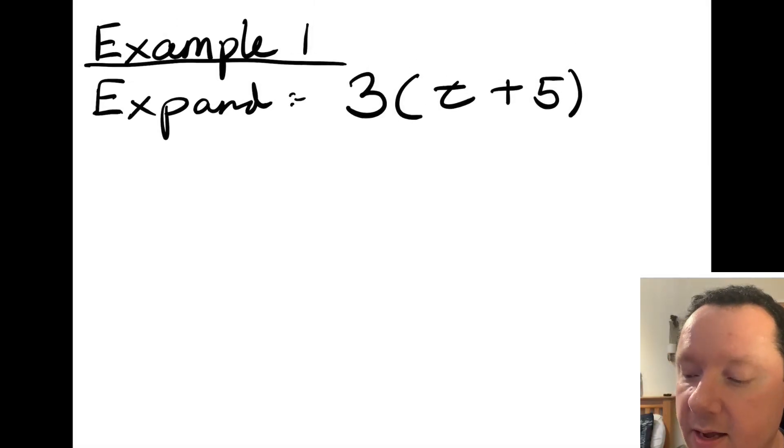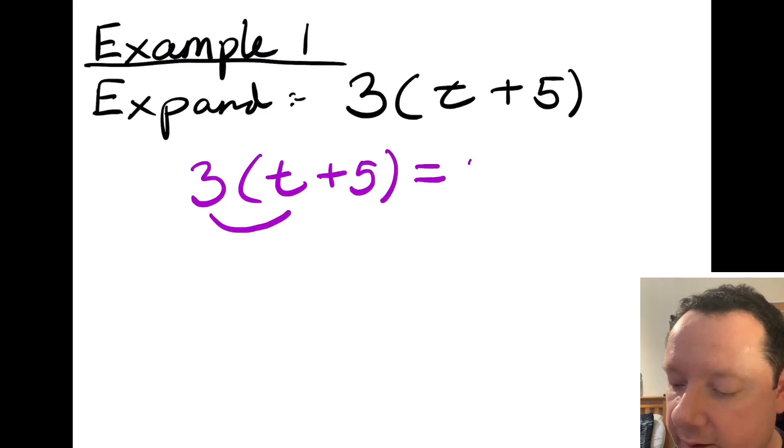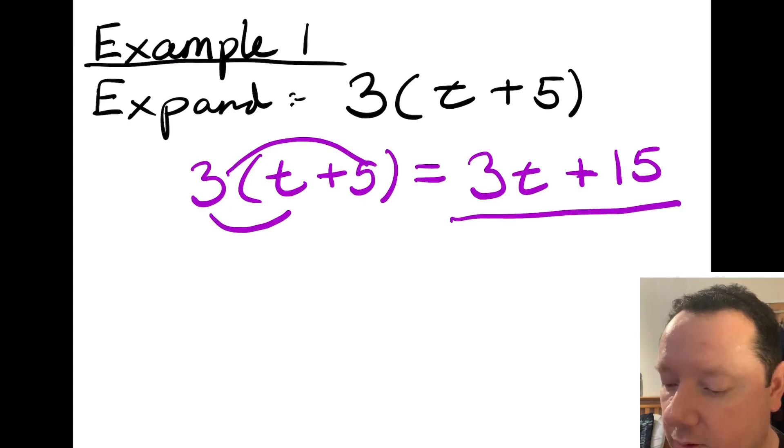So example one says expand 3 bracket t plus 5. So I've got 3 bracket t plus 5 equals, where I need to do 3 times t, that's 3t. Plus I need to do 3 times 5, that's 15. And I'll just check my answer is 15, it is, so I'm finished. I've timesed here and I've timesed here. 3 has been times by t and 5 to get 15 and 3t.